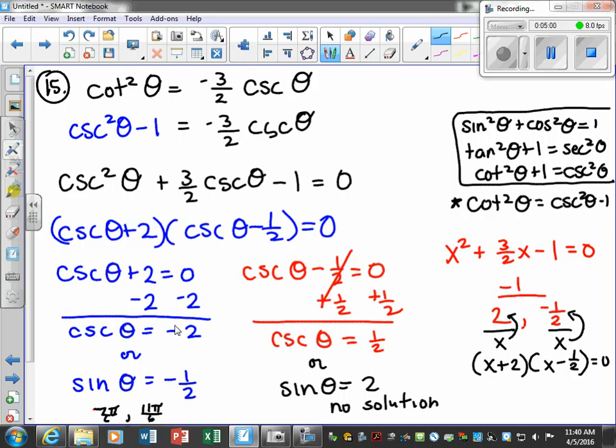Good. So we only use the solution values from this side, which our answers are just going to be seven pi six and eleven pi six.